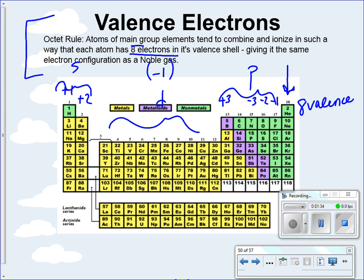That's going to correlate with how many electrons a particular atom has to gain or lose in order to look like a noble gas. For example, fluorine is in group 17. It's got 7 valence electrons, and it wants 8. So in order to do that, it's going to add 1 extra valence electron to look like neon, and it's going to have a charge of negative 1 once it does that.